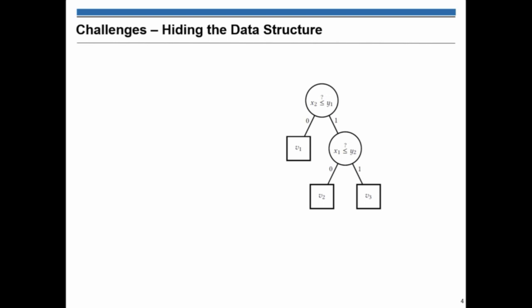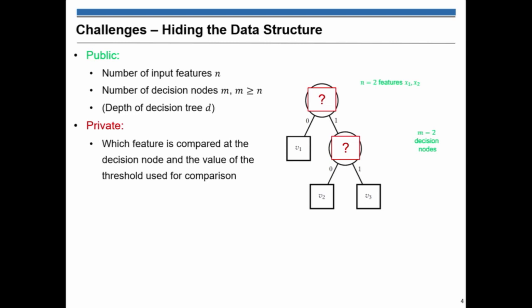The challenges here is that some of this information about decision trees are public, like the number of the inputs in the feature vector or the number of decision nodes and also the depth of the decision tree.